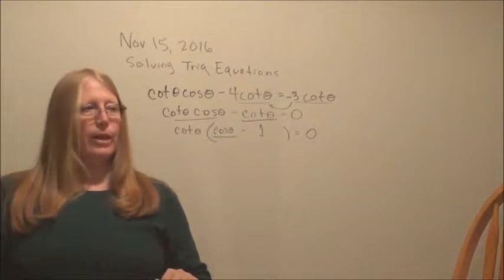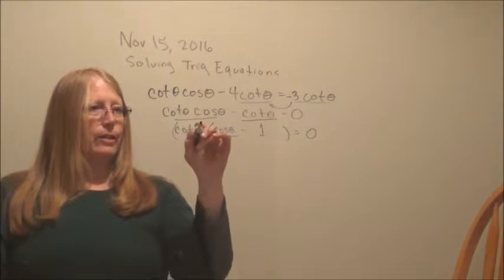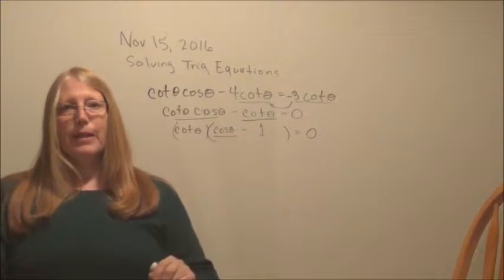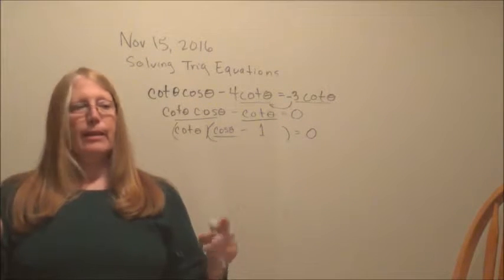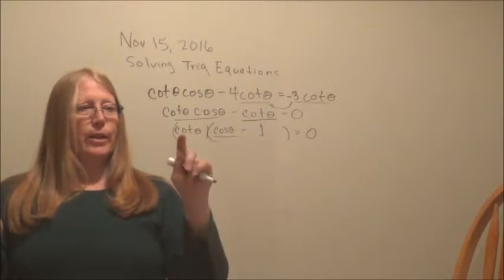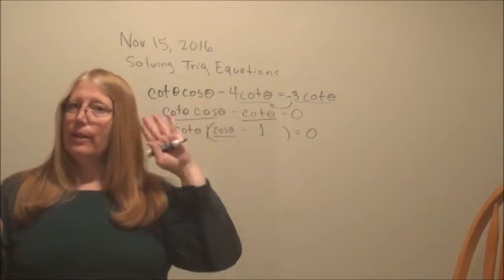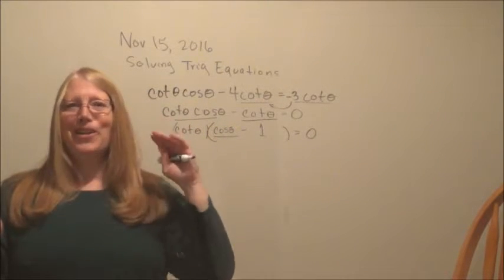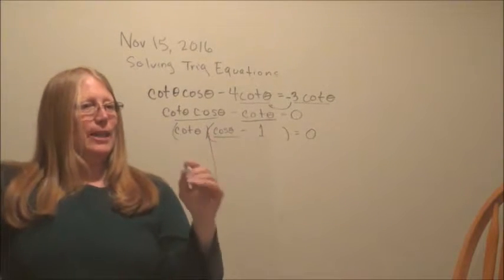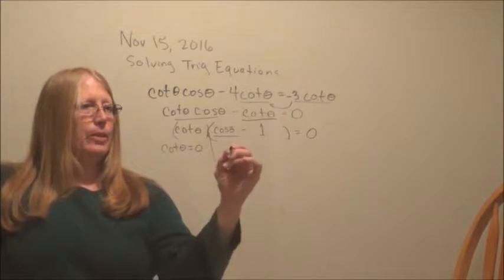So now we have two factors. That's the reason we factored and set it equal to zero, is because of that powerful statement: when you have two things multiplied together that give you zero, either one is or the other is zero, or both. Alright, so we got the two branches. Cotangent theta, we set each of them equal to zero.